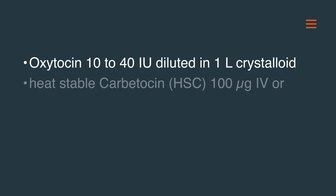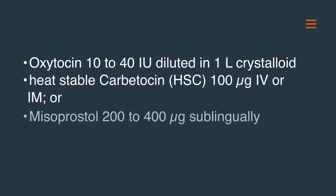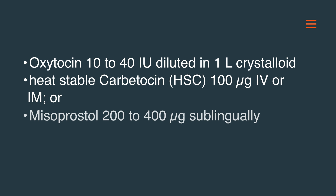Oxytocin 10–40 international units diluted in 1 litre of crystalloid is infused over 4–8 hours, and higher doses like 40–80 international units are given if PPH risk factors are present. Heat-stable carbetocin 100 mcg IV or IM, or misoprostol 200–400 mcg sublingually, can also be given.